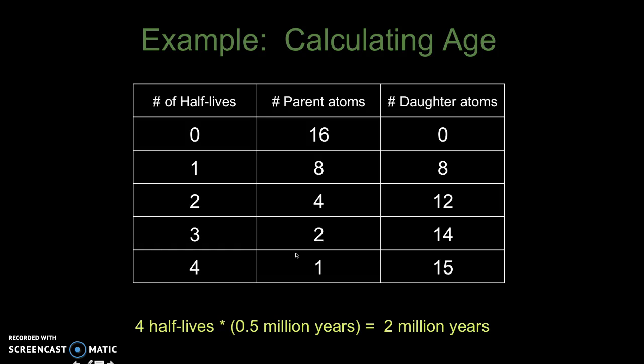To complete this example, I like to make tables and we can actually walk through to figure out how many half-lives have passed in this sample. In this example, we're going to start out with 16 parent atoms. I just took 15 and 1, added it together and we got 16. At the zero point, we have 16 parent atoms and zero daughter atoms. After one half-life, we divide 16 by 2 and we get 8 and then that means 8 have become the daughter atom.